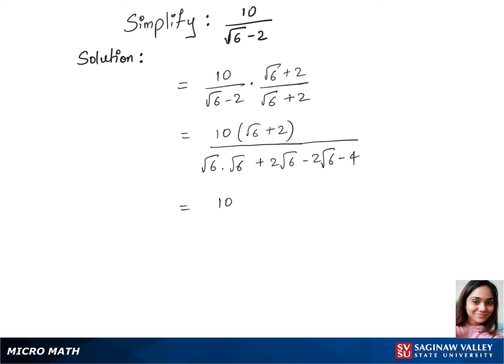Now our next step will be 10 times root 6 plus 2 over root 6 times root 6 is just 6 and plus 2 root 6 and minus 2 root 6 gets cancelled. So we are left with minus 4.